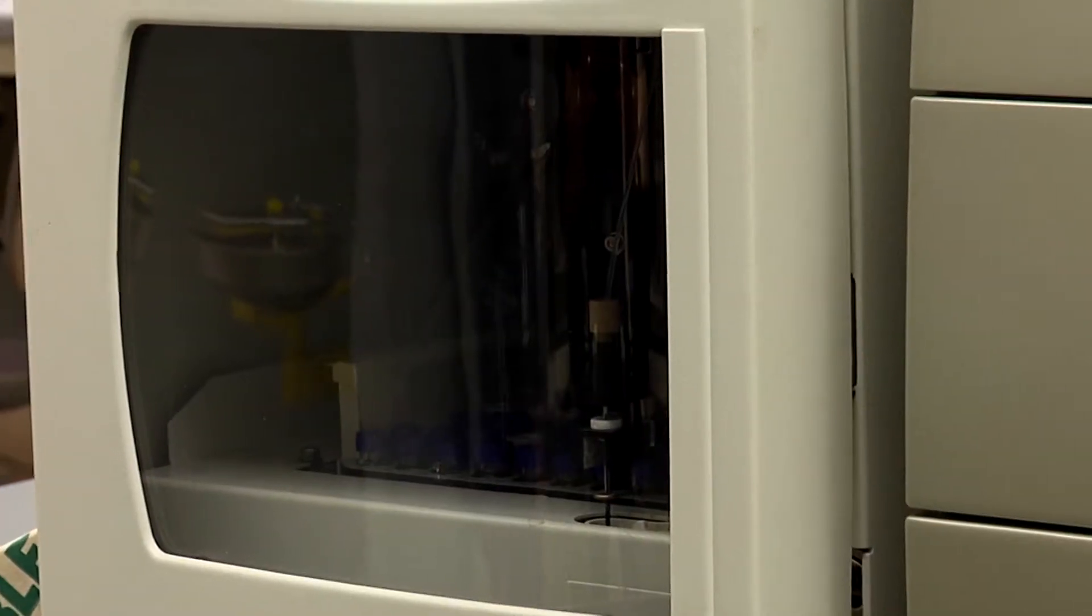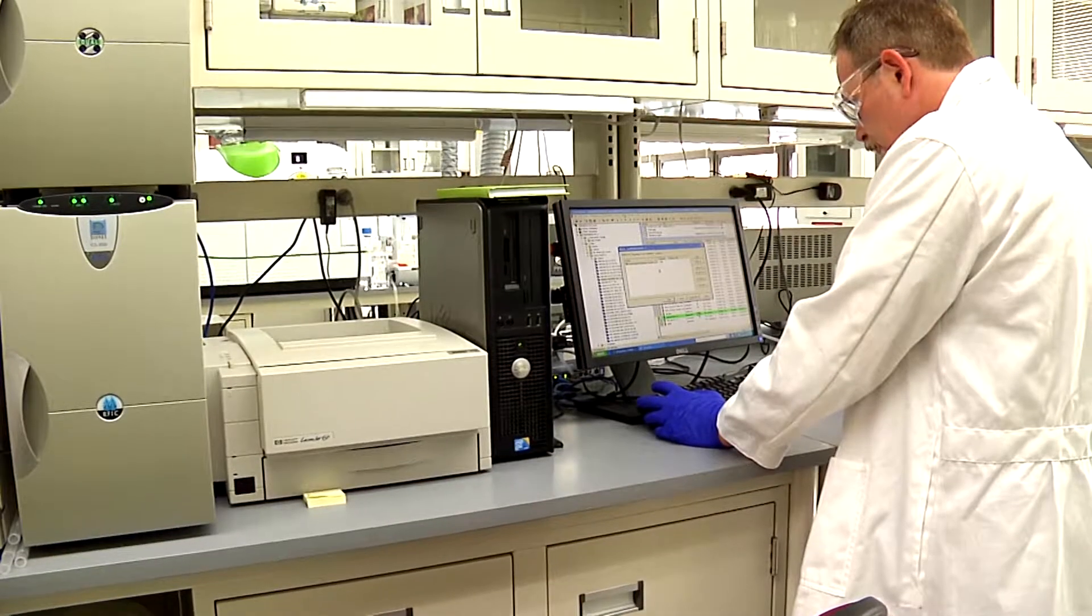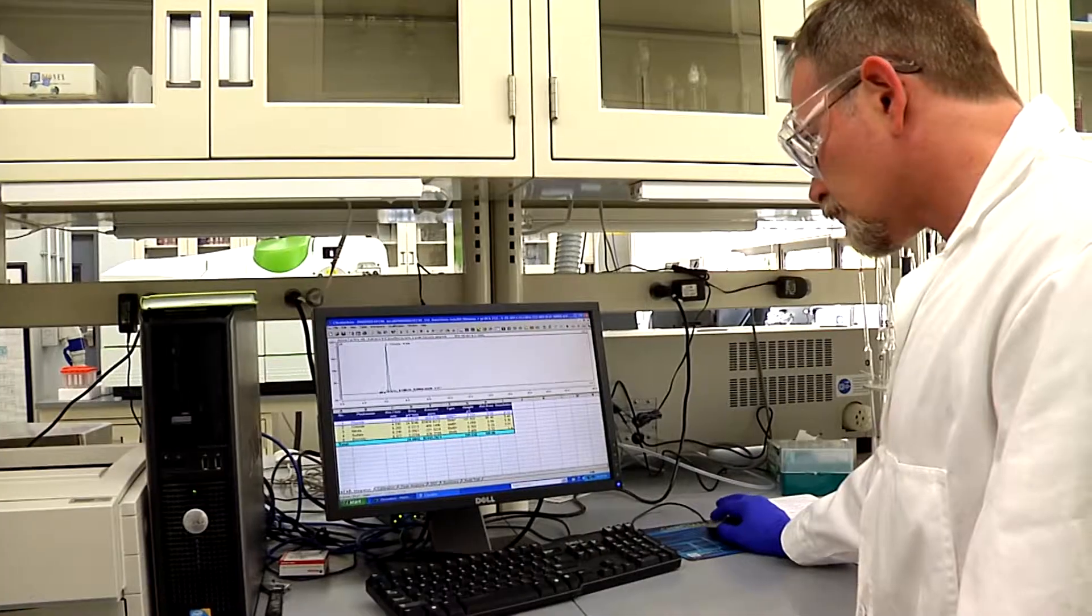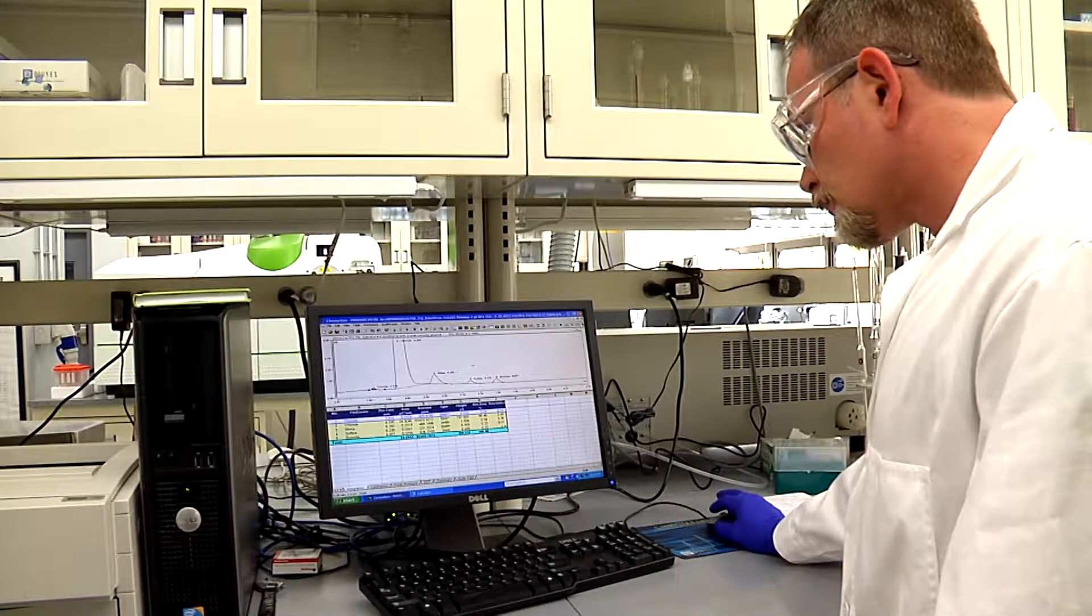Another method of analysis is ion chromatography, which is a process that allows the separation of ions and polar molecules based on their charge. It is often used in protein purification, water analysis, and quality control.